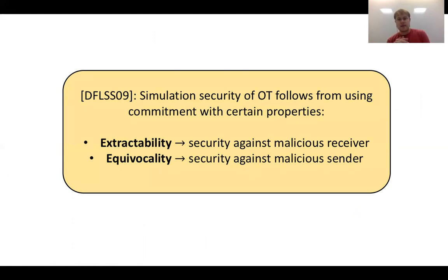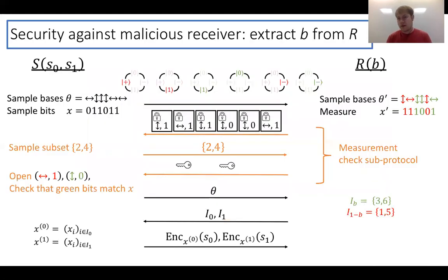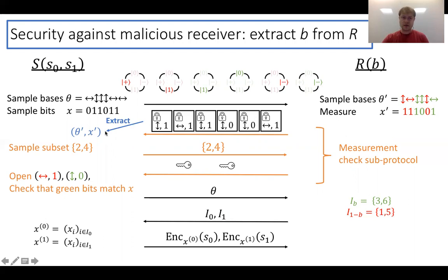DFLSS showed that if the bit commitment scheme satisfies certain special properties, you can prove the protocol is simulation secure. If the commitment scheme is extractable, you can obtain security against a malicious receiver. If it's equivocal, you can obtain security against a malicious sender. For security against a malicious receiver, the simulator must interact with the receiver and extract their effective choice bit B. The simulator extracts from the receiver's commitments (using extractability), and once it knows θ' and X', when the receiver sends the partition indices i_0 and i_1, the simulator knows exactly which positions the receiver guessed right versus wrong, which reveals the receiver's choice bit.